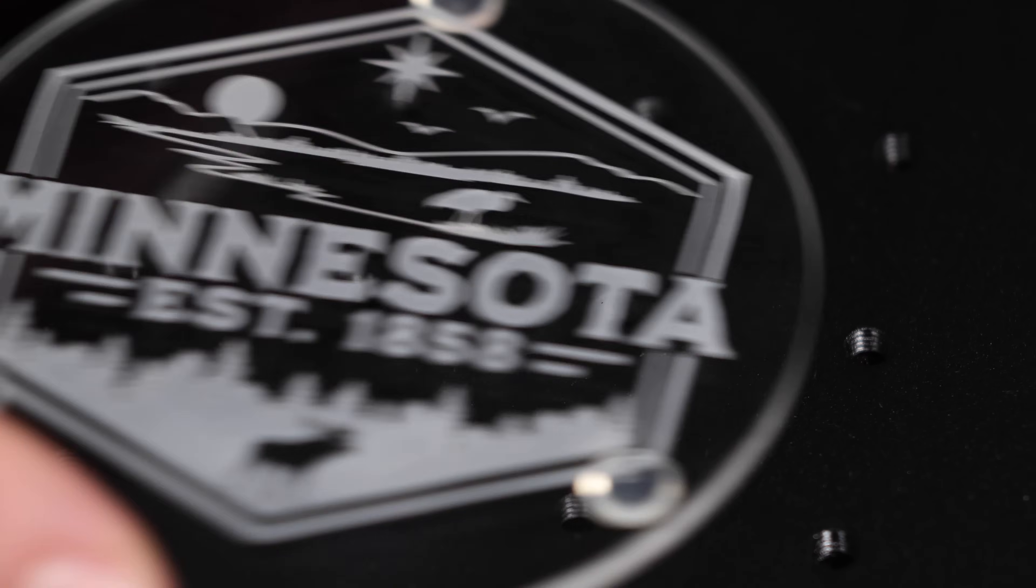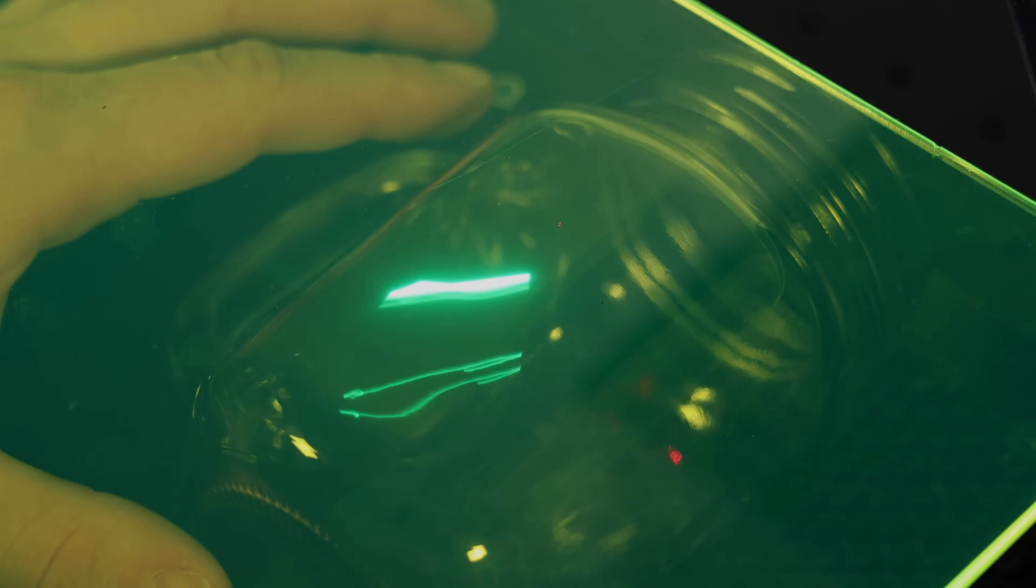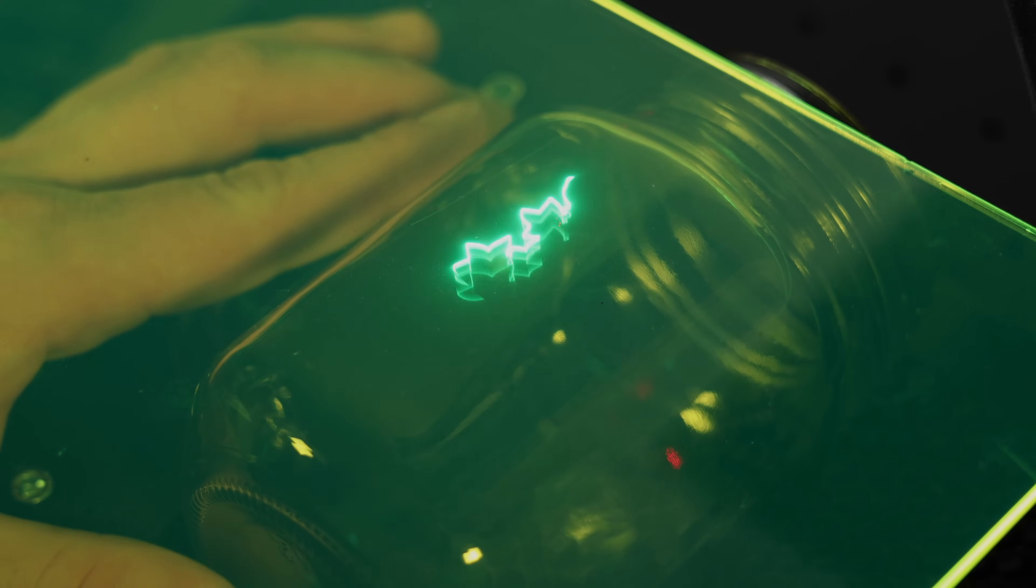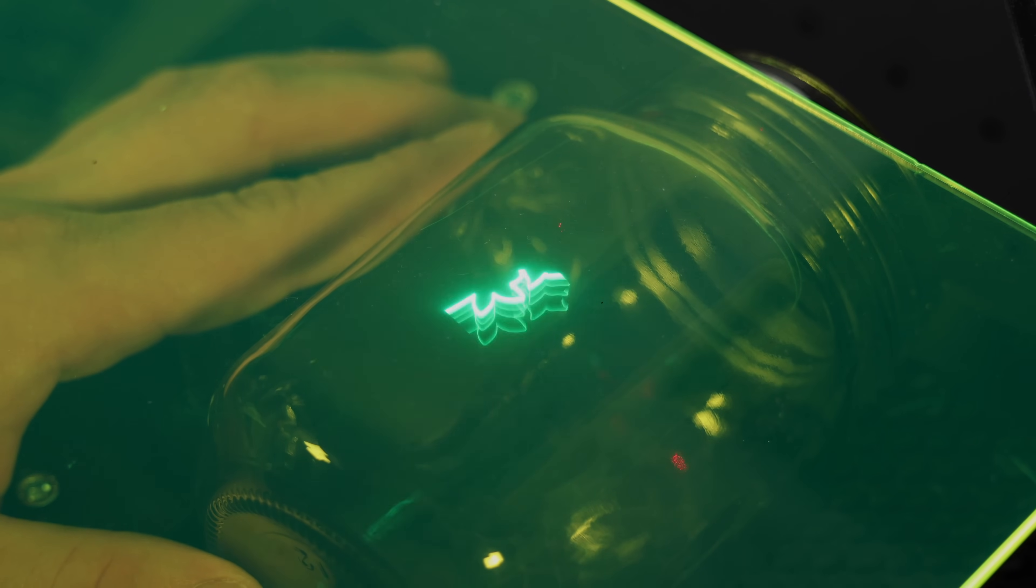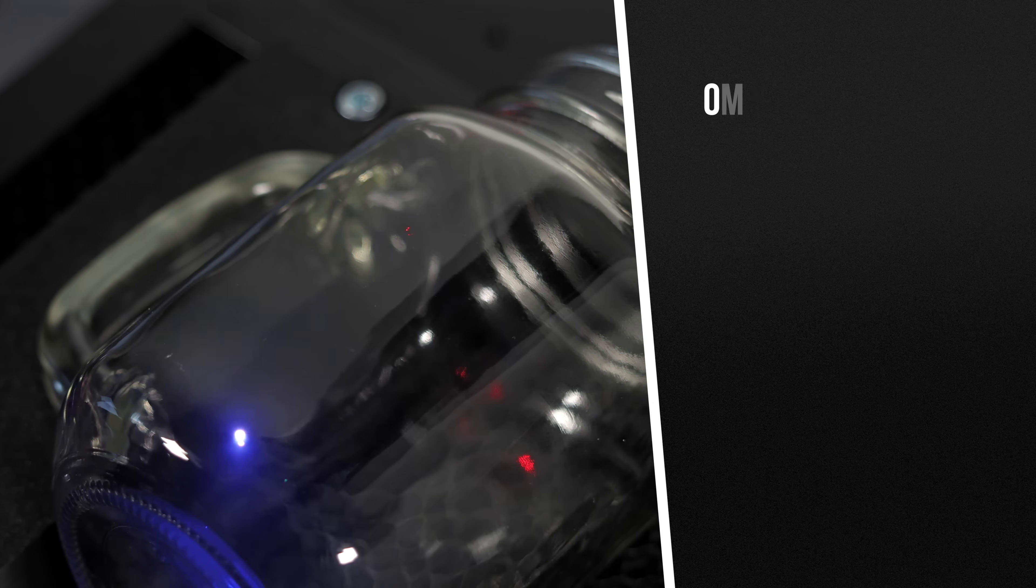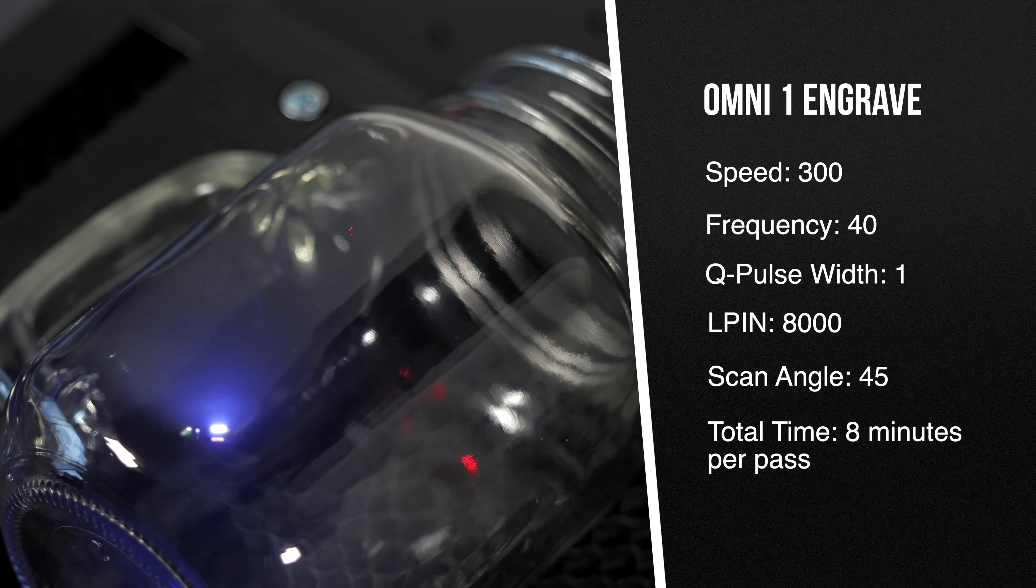But before we move on, let's try another glass piece. This time, we're going to create a custom mason jar with a flower design to celebrate the month of August. For this attempt, we lowered the lines per inch to 3,000, and it took about 7 minutes for a single pass.